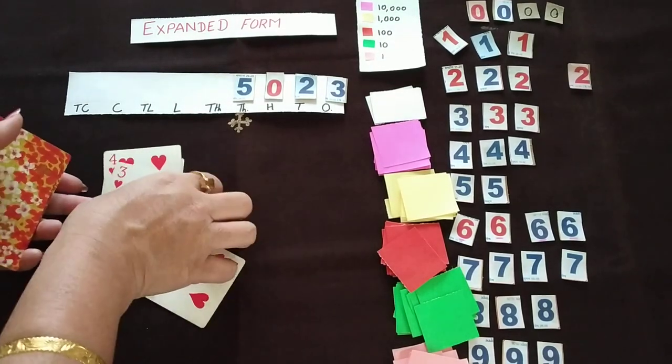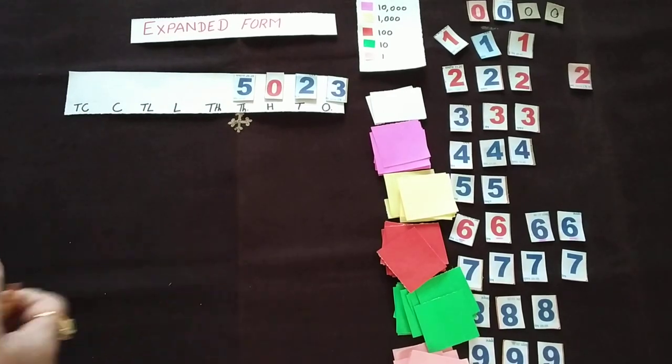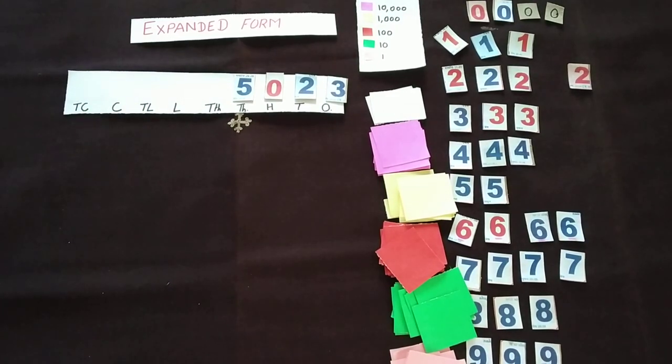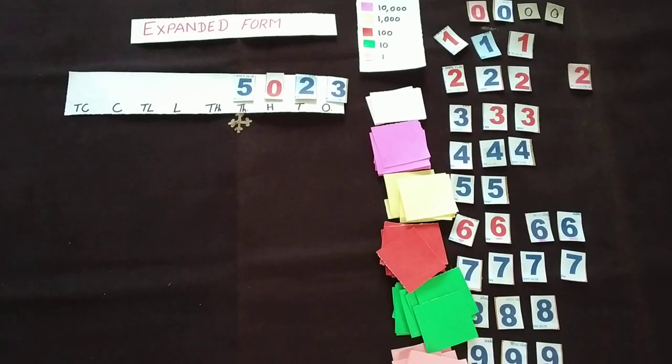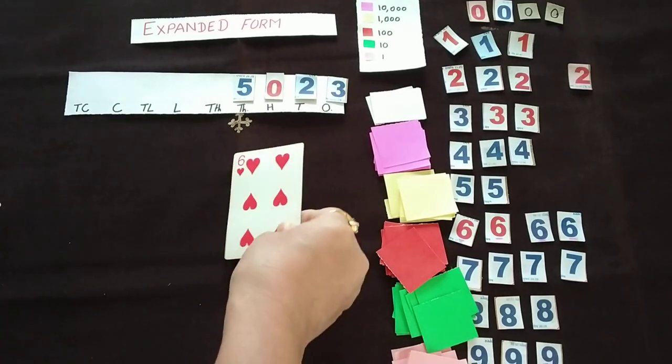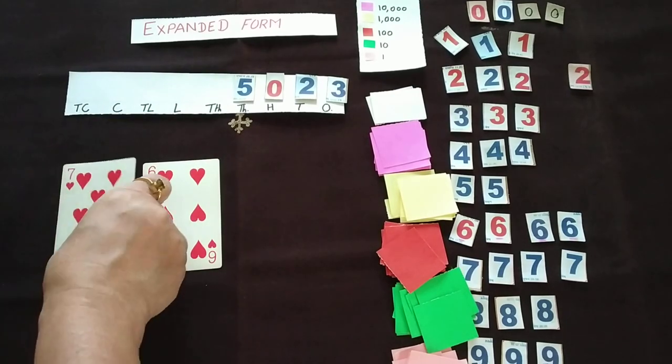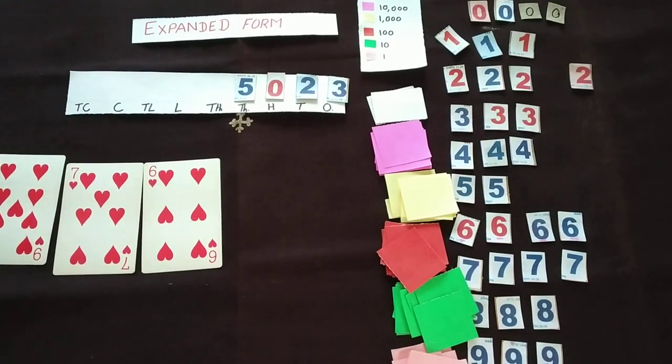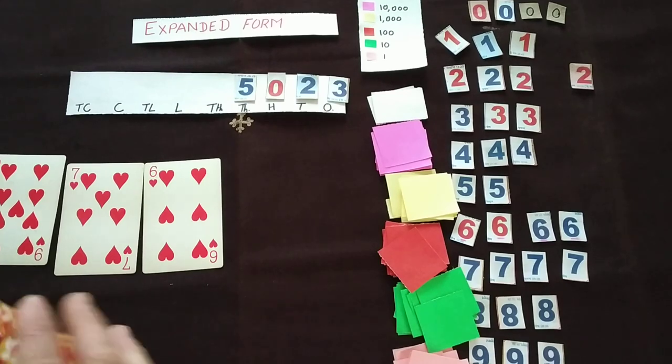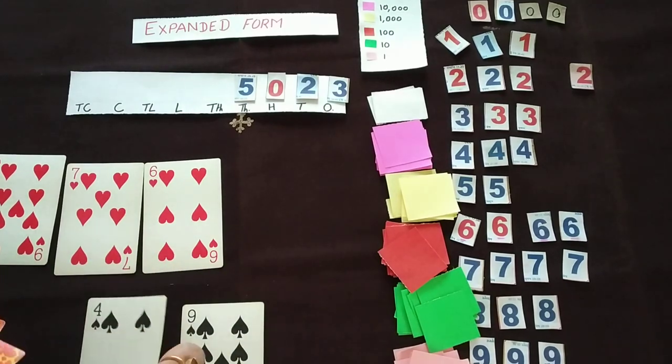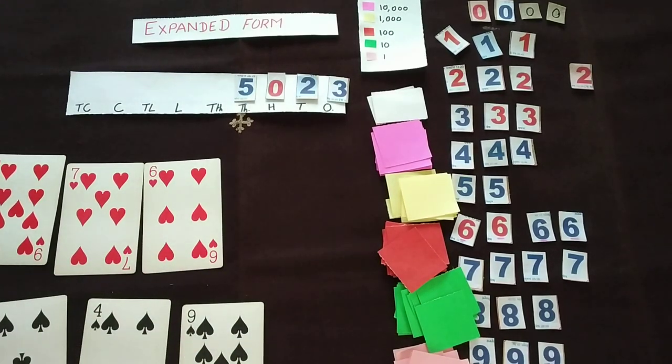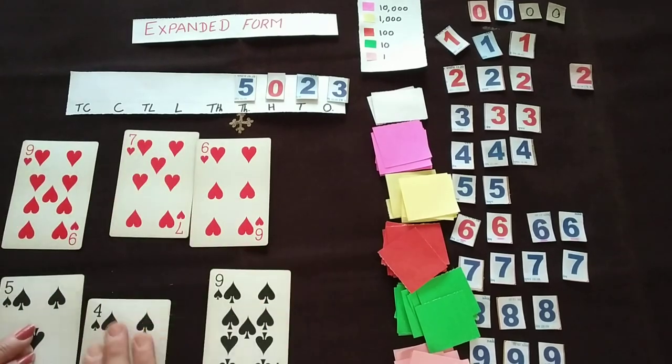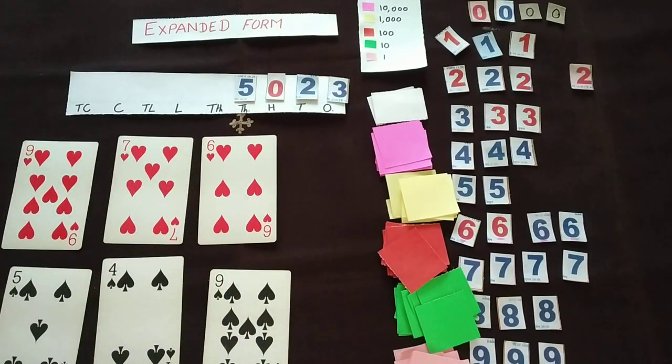One more way we can do that. If two groups are there, so you can ask your group members to just put the cards over here. Again, suppose 3-digit number: 1, 2, and 3. This one group has put, another group also will just put down the numbers. And both the groups will arrange this with the help of these sheets arranged in expanded form.